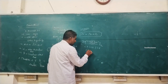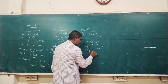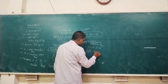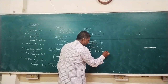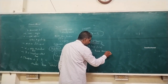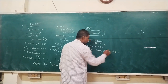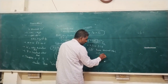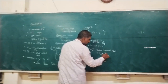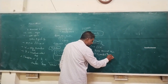In common base configuration, the base terminal is common to both emitter and collector. It is also known as grounded base configuration.